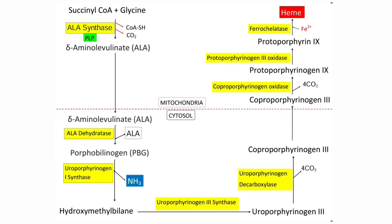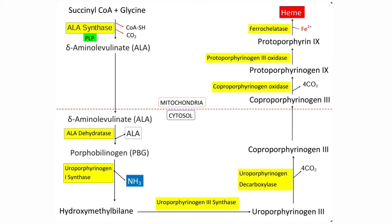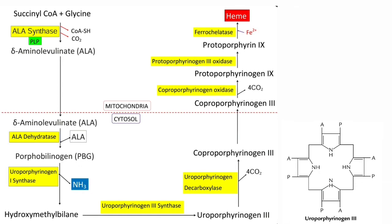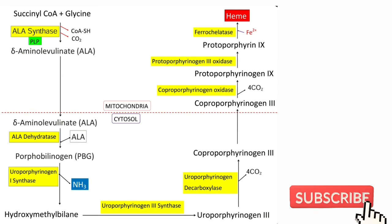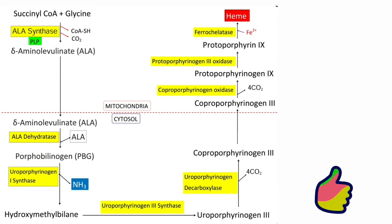The next step is the formation of uroporphyrinogen-3. Four molecules of porphobilinogen condense to form the first porphyrin of the heme-synthetic pathway, uroporphyrinogen-3, in which four pyrrole rings are interconnected by methylene bridges. These methylene bridges are derived from the alpha-carbon of glycine. This formation involves the successive action of two enzymes: uroporphyrinogen-1-synthase (also called porphobilinogen deaminase) and uroporphyrinogen-3-cosynthase. Uroporphyrinogen-1-synthase catalyzes the condensation of four porphobilinogen units to form the linear tetrapyrrole called hydroxymethylbilane.